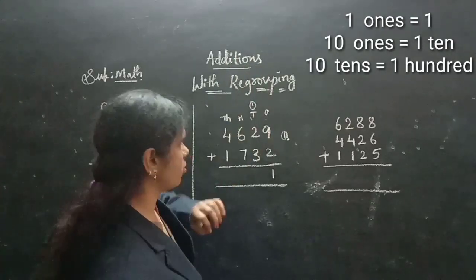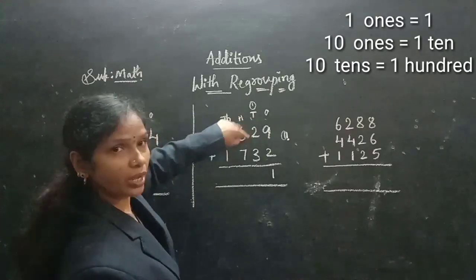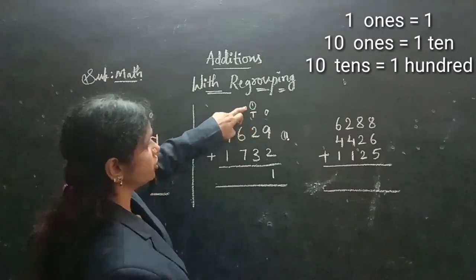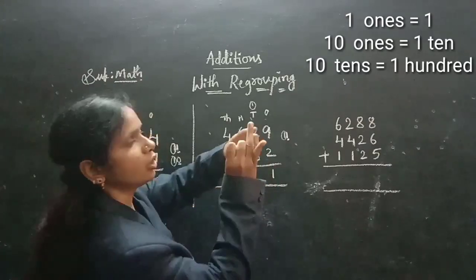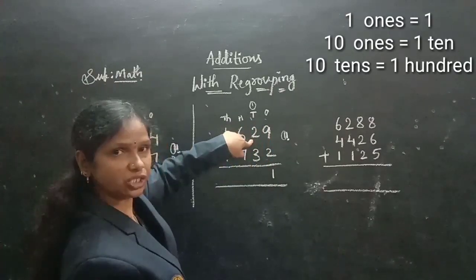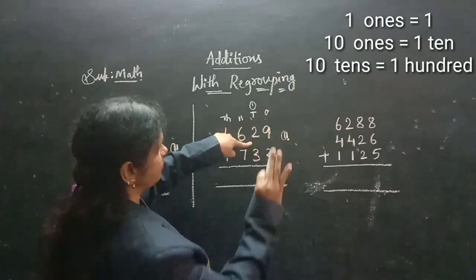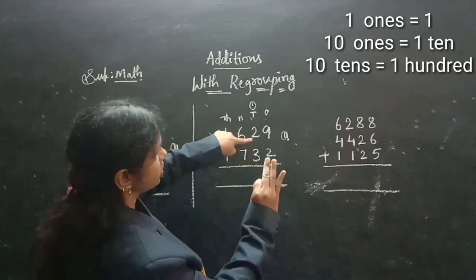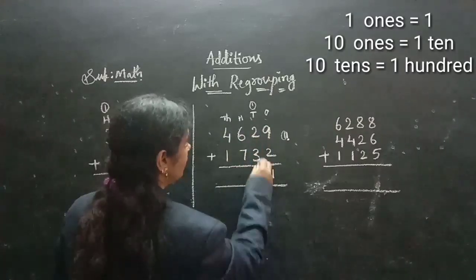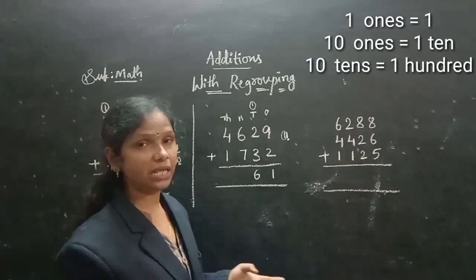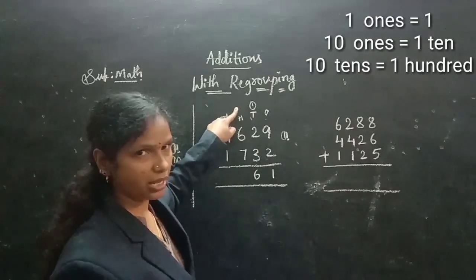Now we are adding the 10's column and starting with the carry, children. So 1 after 2 — 1 after 2 means 2, 3. Till here we are getting 3 children. Again, next digit we have 3. So after 3 means: till here 3, then 4, 5, 6. Next to 3 added means 6 we are getting. We are not getting any carry. Why? Because it's a 1-digit number, children. So here we don't have any carry on the 100's.